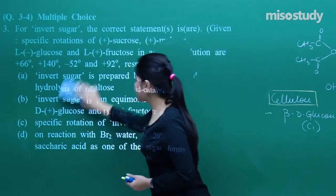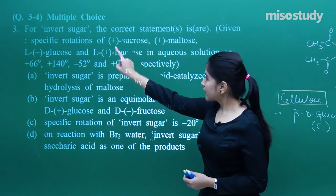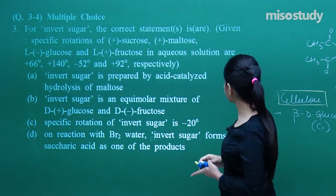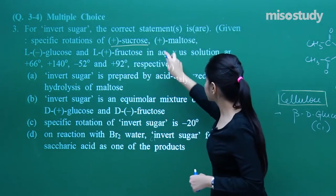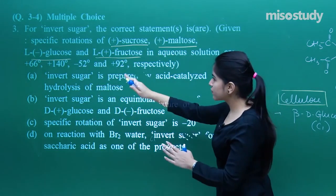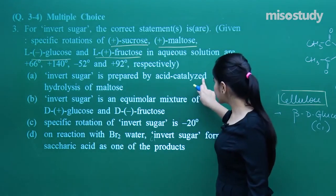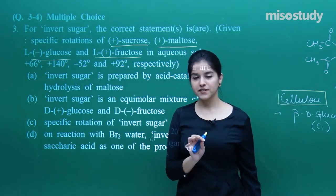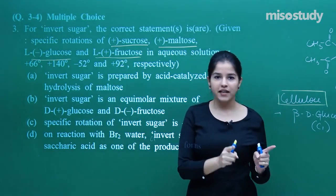Now it is time for multiple choice — more than one option may be correct. For invert sugar, the correct statements are to be identified. Given are specific rotations of sucrose, maltose, glucose, and fructose in aqueous solution. Option A says invert sugar is prepared by acid-catalyzed hydrolysis of maltose — but the concept of inversion of sugar is only dealt with in the case of sucrose.